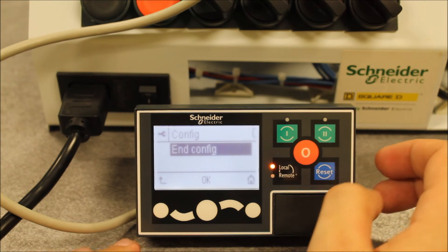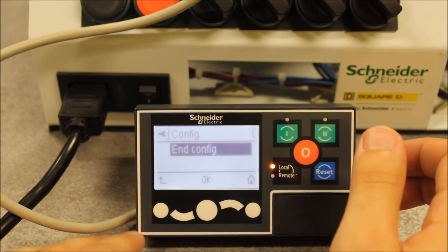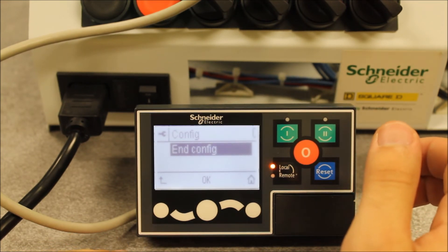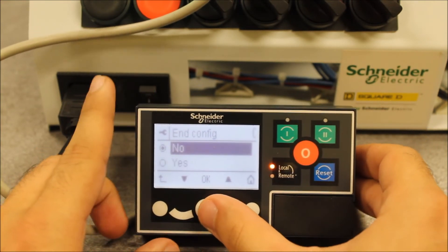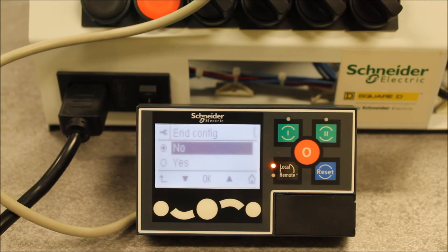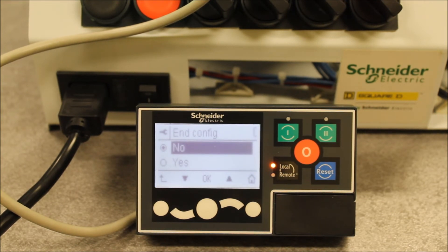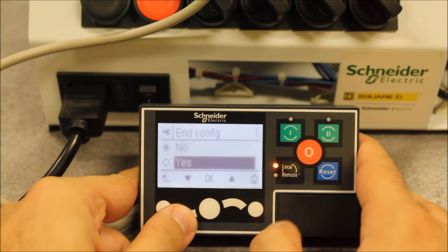So if you're already under configuration mode and want to get out of configuration mode, the first prompt is an end config value. You want to enter on this, and it wants to make sure that you are wanting to exit configuration. So you can arrow down to yes.